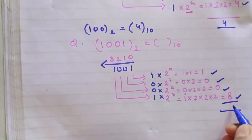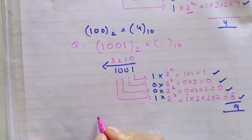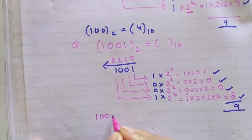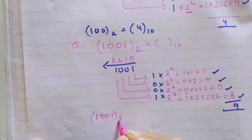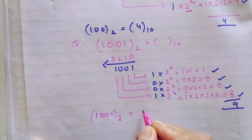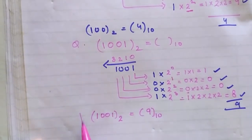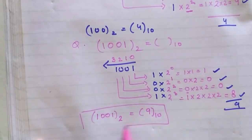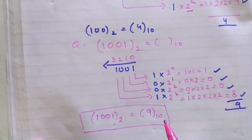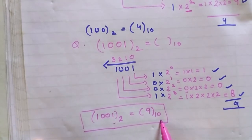Which gives you 9. So in this way we can say that the decimal value of binary 1001 will be 9. This is the way to convert a binary number to a decimal number. Thank you.